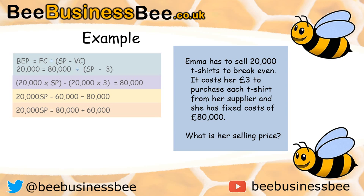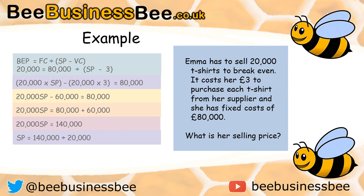My next step is to solve it. I want to leave my 20,000 SP on one side. So I've moved the minus 60,000 — since it's a minus on that side, it becomes a positive on the other side, leaving me with 80,000 plus 60,000. 20,000 SP equals 140,000. Now this is where it catches people out: 20,000 SP means multiply by. We want to get SP on its own, so we need to divide. SP equals 140,000 divided by 20,000, which gives SP equals £7. We've solved it — a little more complex, but it can be done.